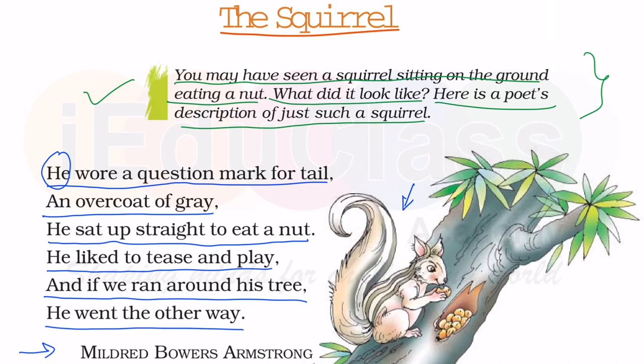The poet tells us that the squirrel is always playing with us. Whenever they ran around his tree, he would run to the other side of the tree. The poet describes the nature of the squirrel as innocently naughty — it likes to tease anyone who comes near him.